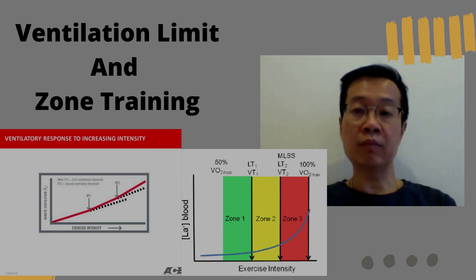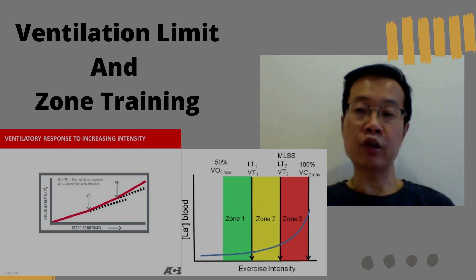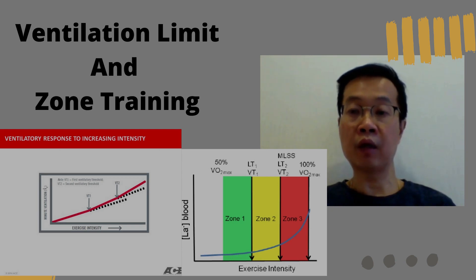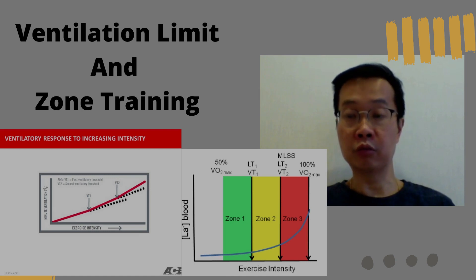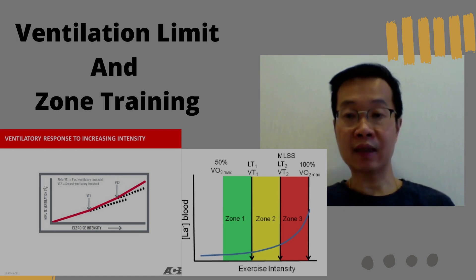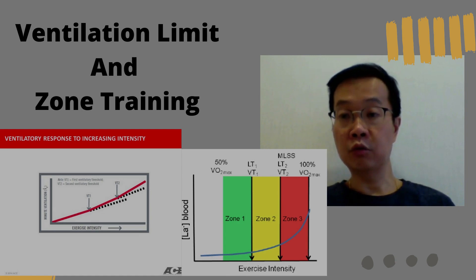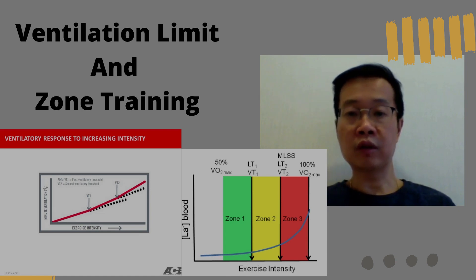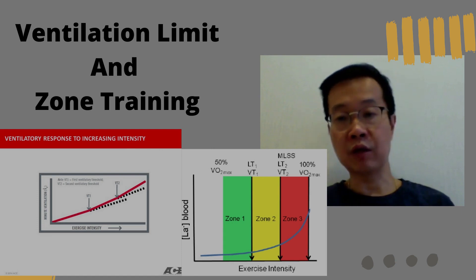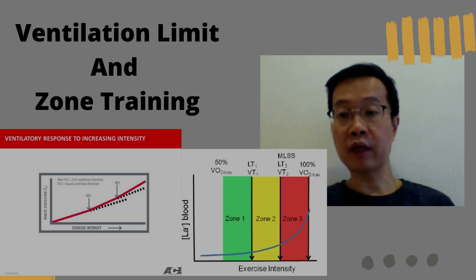To incorporate the above concept into a training format, you can imagine stepping up the intensity level by breaking up your exercise regime into three zones. Zone 1 is where you are exercising under the VT1 threshold. At Zone 2, you should be somewhere between VT1 and VT2 levels. At Zone 3, you will be pushing at VT2 level and above.